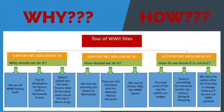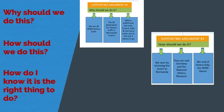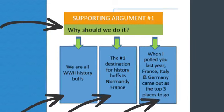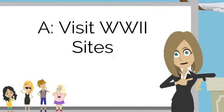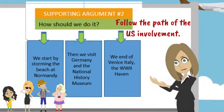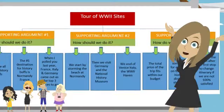Below your key message are supporting arguments for that key message. Supporting arguments answer the question 'why and how.' The most common three why-and-how questions are: 1. Why should we do this? 2. How should we do it? 3. How do I know it's the right thing to do? Below each supporting argument is your supporting data. In our European example, I answer why we should do our tour of famous World War II sites, providing three data points for rationale. I also answer how we should do it with three steps. And I provide proof that this is the right idea.